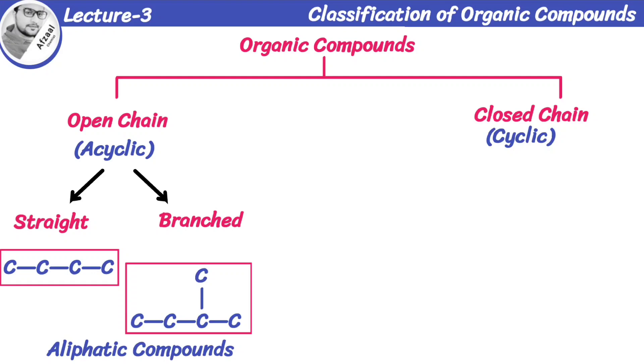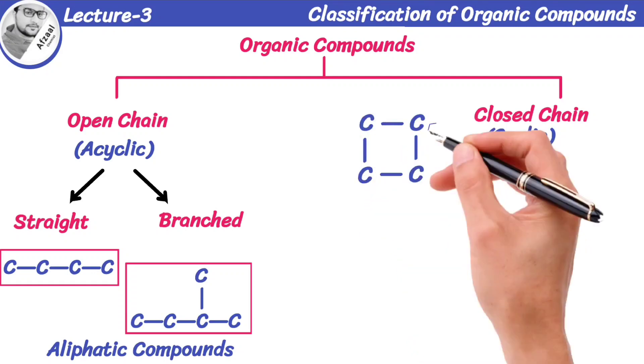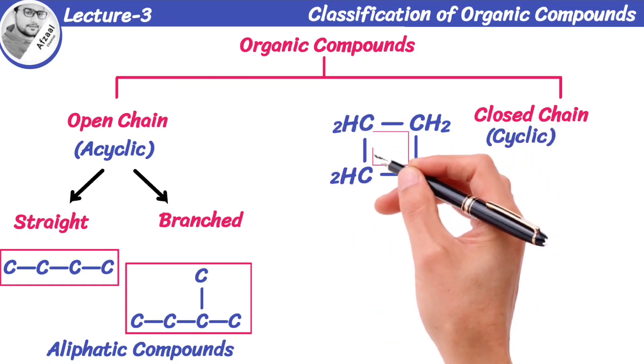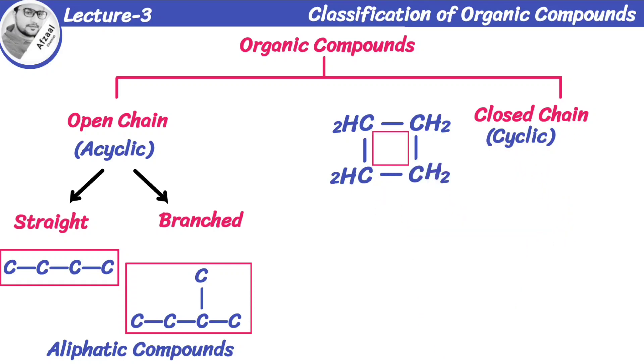Now, what are closed-chain or cyclic compounds? Closed-chain or cyclic compounds are those in which the carbon atoms at the end of the chain are not free. They are linked to form a ring or cyclic structure. That's why they are classified as cyclic compounds.